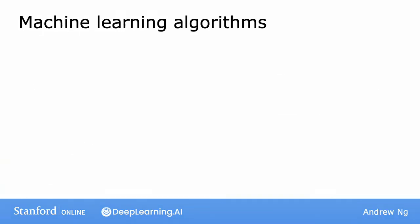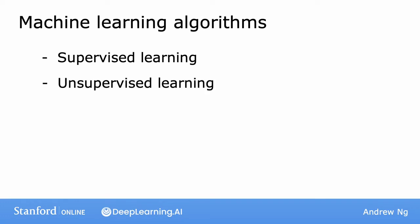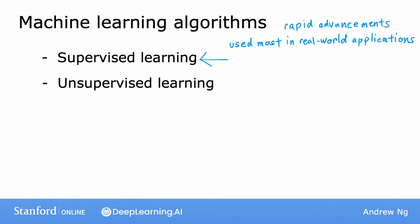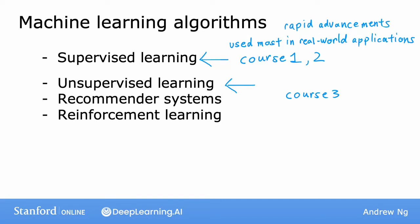In this class, you'll learn about many different learning algorithms. The two main types of machine learning are supervised learning and unsupervised learning. We'll define what these terms mean more in the next couple of videos. Of these two, supervised learning is the type of machine learning that is used most in many real-world applications and has seen the most rapid advancement and innovation. In this specialization, which has three courses in total, the first and second courses will focus on supervised learning and the third will focus on unsupervised learning, recommender systems, and reinforcement learning.